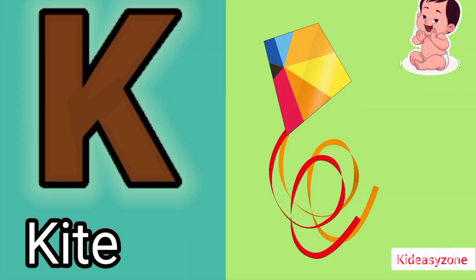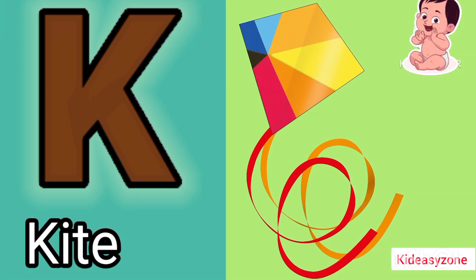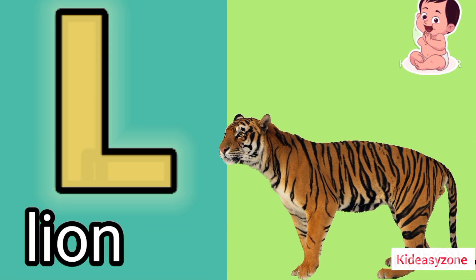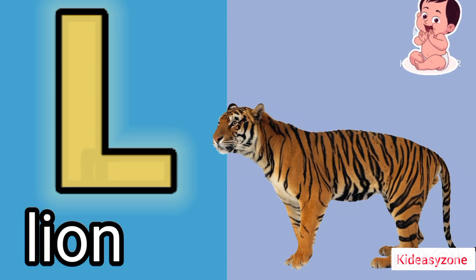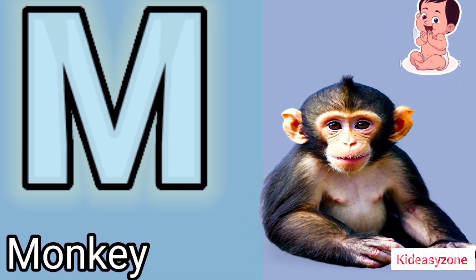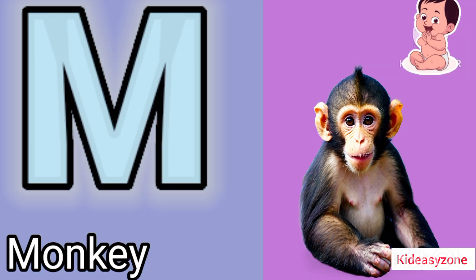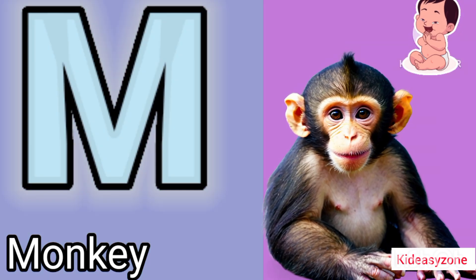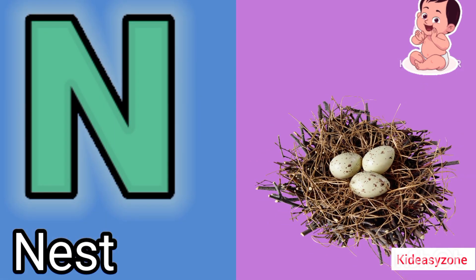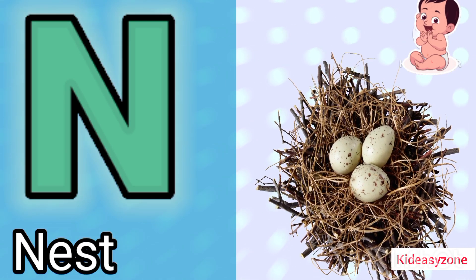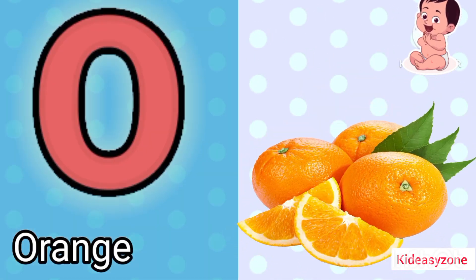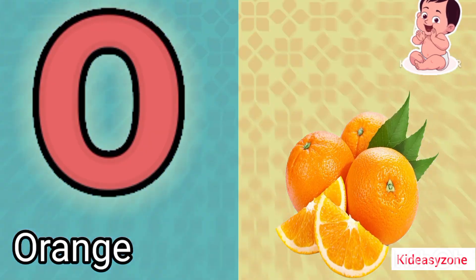K is for kite. L is for lion. M is for monkey. N is for nest. O is for orange.